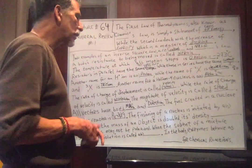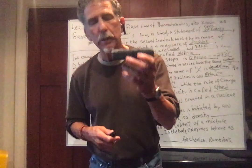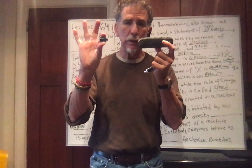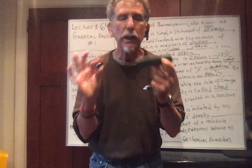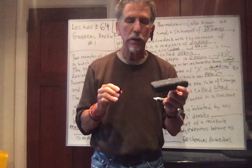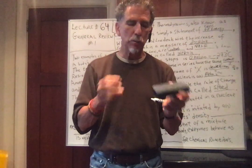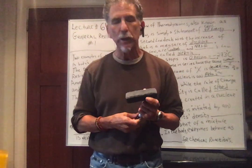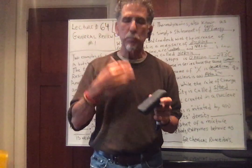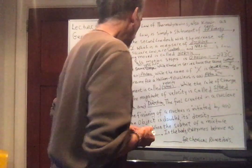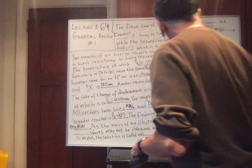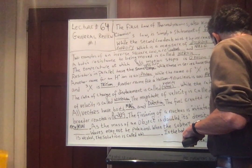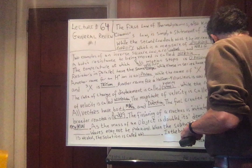As the mass of an object is doubled, what happens to the density? If you have a piece of lead this big and a piece of lead that big, they have the same density. Density is the ratio of mass over volume. If you double the mass, you're also doubling the volume, so the ratio stays the same. As the mass of an object is doubled, its density does not change.